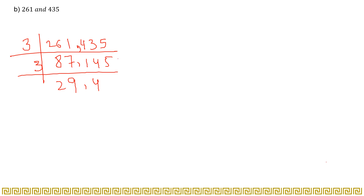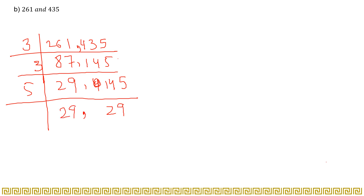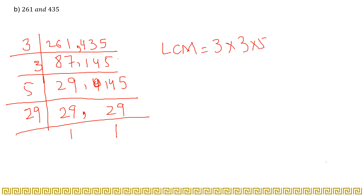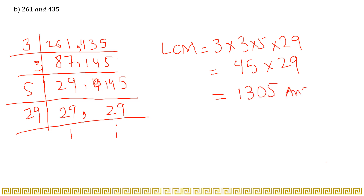Since 3 cannot divide 145, we write it as is. We then try with 5: 5×29=145 and we write 29 as it is. Then we divide by 29 because 29 is a prime number: 29×1=29. The LCM will be 3 × 3 × 5 × 29. Multiplying: 3×3=9, 9×5=45, 45×29=1305. So 1305 is your LCM.